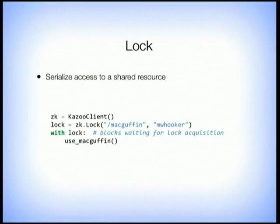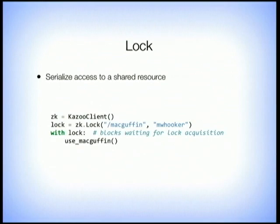The lock serializes access to a shared resource. It looks just like threading.lock, except you give it a path — a well-known location where your different clients coordinate. We're going to try to lock the MacGuffin; the second parameter is an optional client identifier, for me it's 'MWHooker'. It's a context manager, so 'with lock' we can use the MacGuffin. This ensures that any number of homogenous nodes that know nothing about each other can make sure only one person is using the MacGuffin at a time.